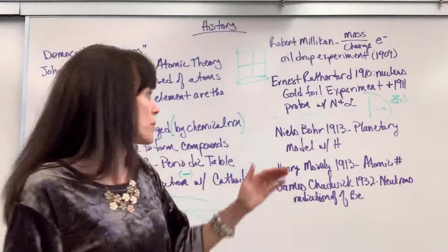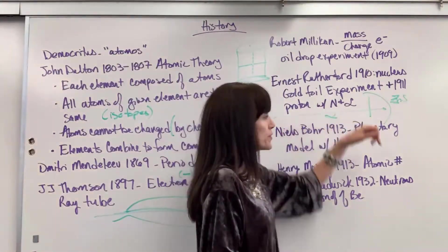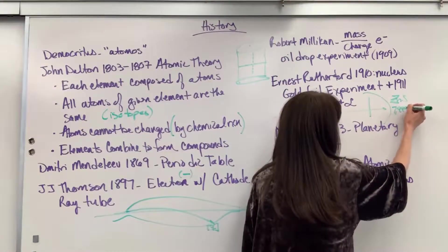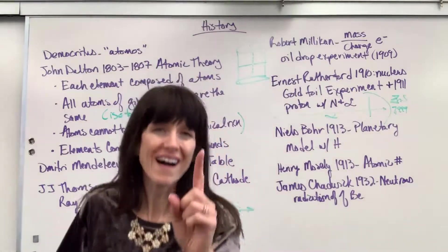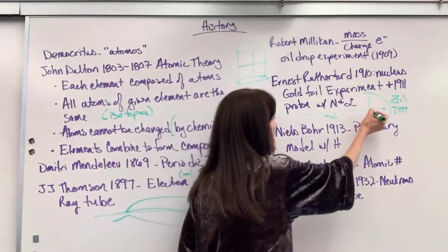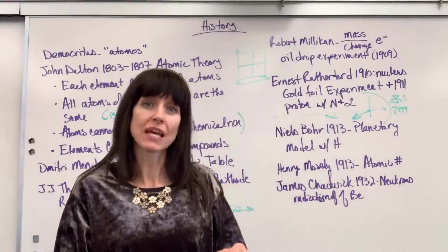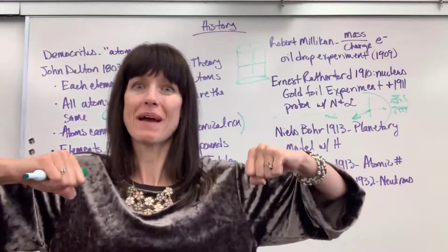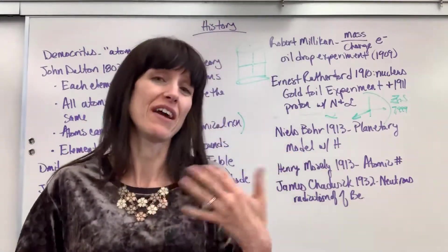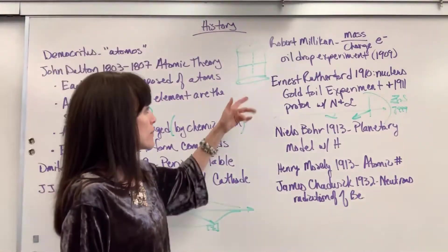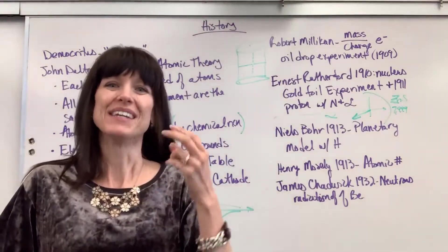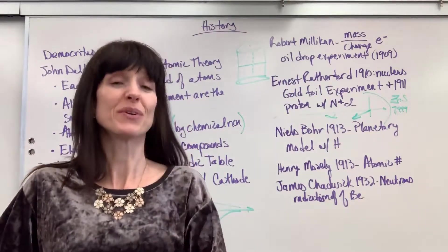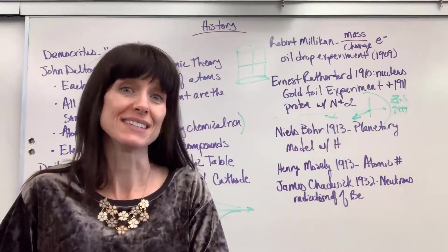This is exactly what he discovered. For every 8,000 particles of alpha particles that he shot through the gold foil, 7,999 hit the back of that zinc sulfide. One out of every 8,000 bounced back. It's almost like pool balls. If you're playing billiards and the cue ball hits the eight ball, they hit and they bounce back. That's what happened once out of every 8,000 particles.